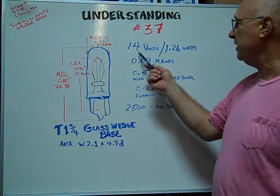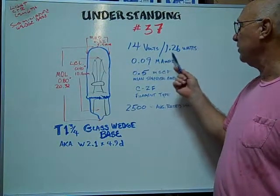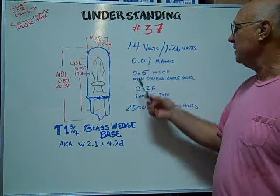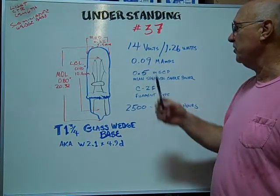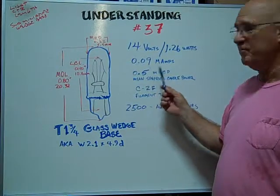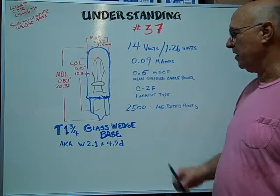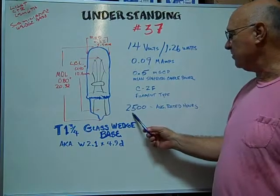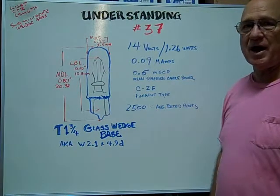The number 37 is rated at 14 volts, 1.26 watts. The milliamps are 0.09. The mean spherical candle power is 0.5. The filament type is a C2F. The average rated hours is 2,500 hours.